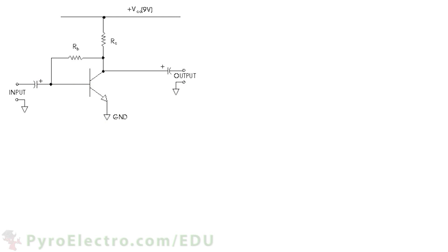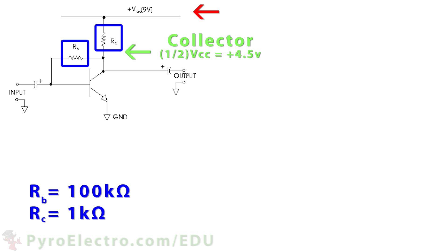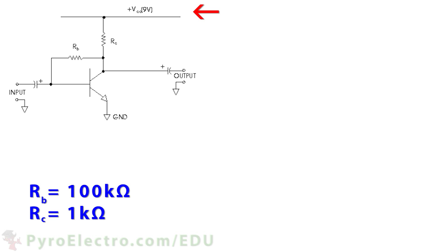In order to make a successful amplifier out of this circuit, we need to know our power, which is 9 volts, and then we need to make it such that the collector pin of the transistor will be half of that, or 4.5 volts. This is done by setting the two resistors, RB and RC, to specific values. For this case, we'll use 1 kOhm and 100 kOhm. And finally, we need to add capacitors on the input and the output of the circuit, so that only the AC audio signal is input or output from the amplifier.